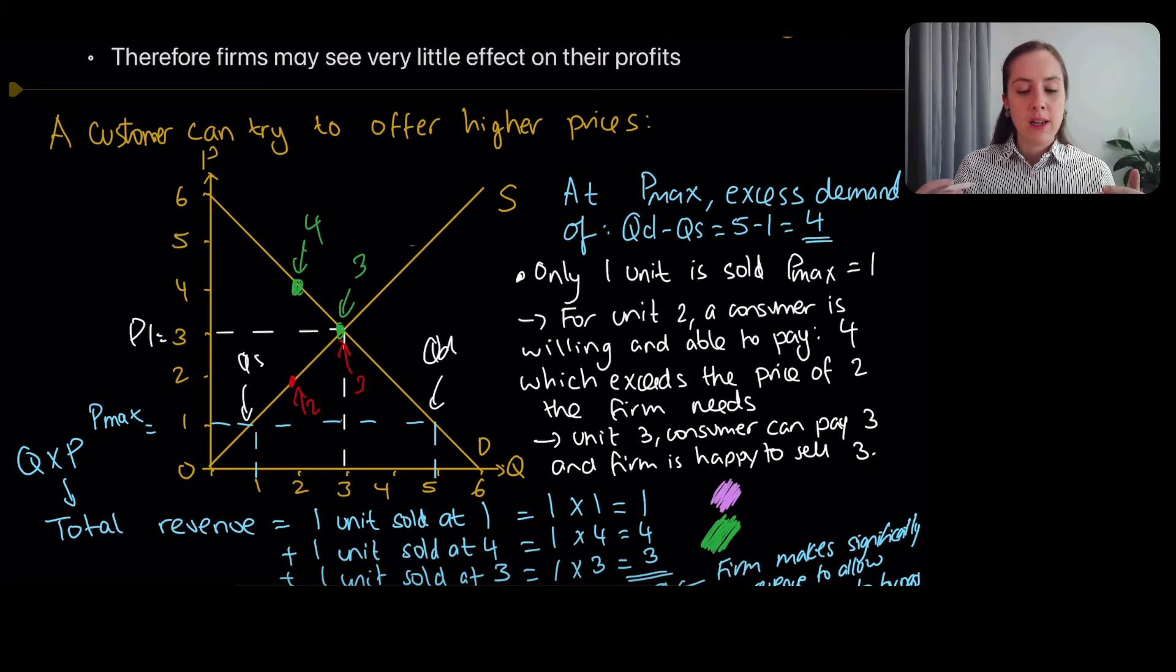So there's a really big problem because a lot of people can't access the goods. And some of these people have a really high ability to buy the goods. So if you look at the people between one and three, as an example, these people can't buy the goods because only one was available. But these people were prepared to pay five and four above the price that the firm was charging before.